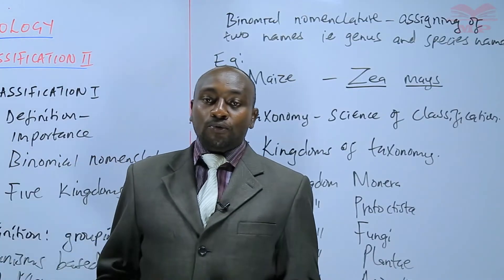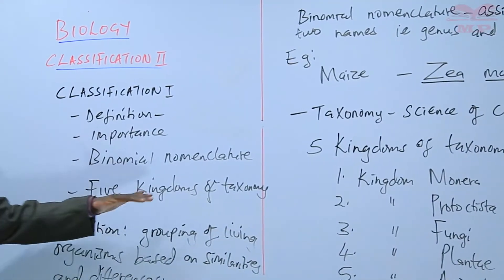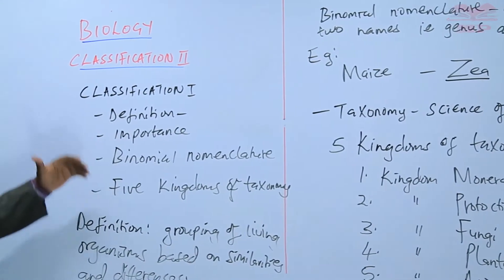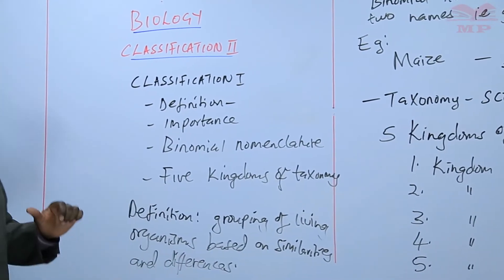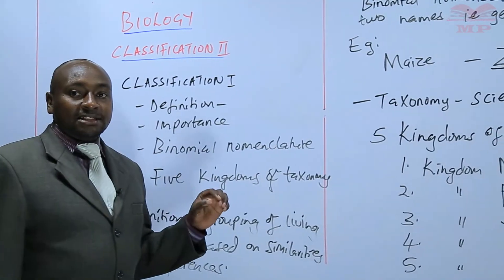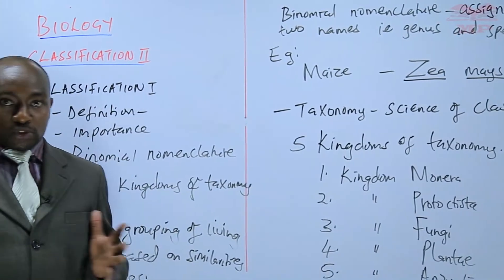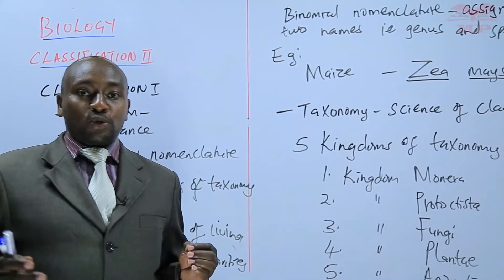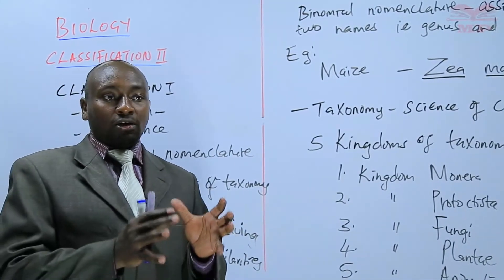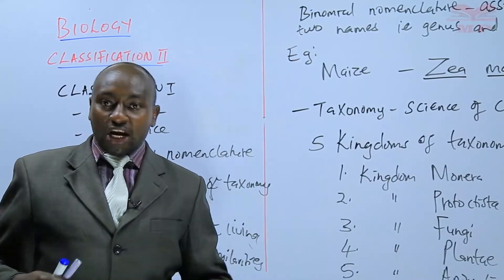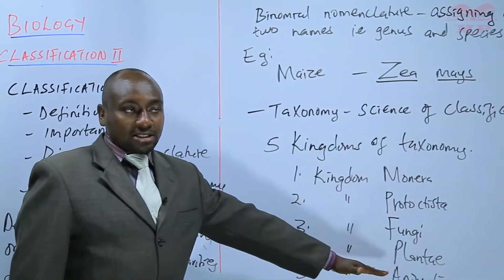We have learned the definition of classification, which is the grouping of organisms based on similarities and differences. We have also learned about why it is important to classify living organisms — to avoid confusion and for easier arrangement of information. When you classify organisms, you arrange information in an orderly manner, like we have already seen with the kingdoms arranged systematically.